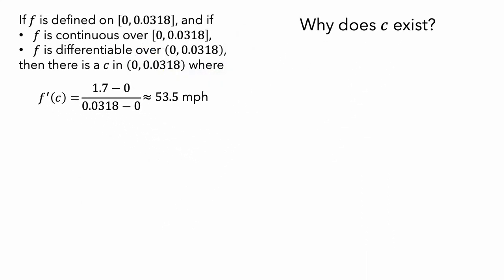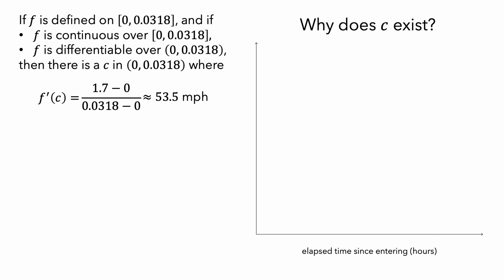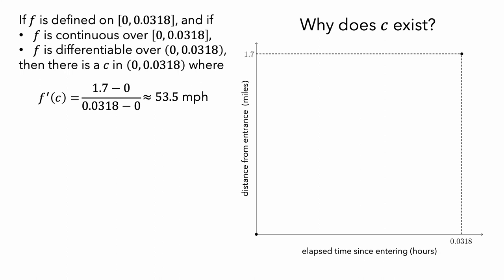Here is the statement of the mean value theorem, and let's think about this in terms of a graph. The horizontal axis will be the elapsed time since the car entered the tunnel, measured in hours. And the vertical axis will be the car's distance from the entrance, measured in miles. We know that if 0 hours have elapsed, the car's distance from the entrance is 0 miles since the car is at the entrance, so we'll add a point at (0, 0) to represent this. Then the car exits the tunnel after 0.0318 hours have elapsed, and it has traveled 1.7 miles.